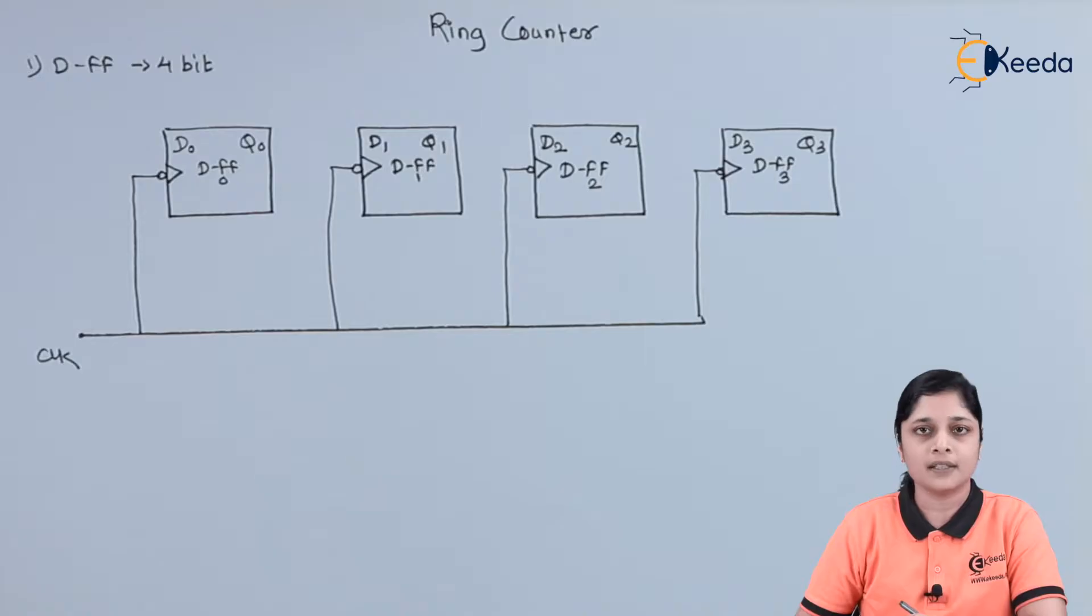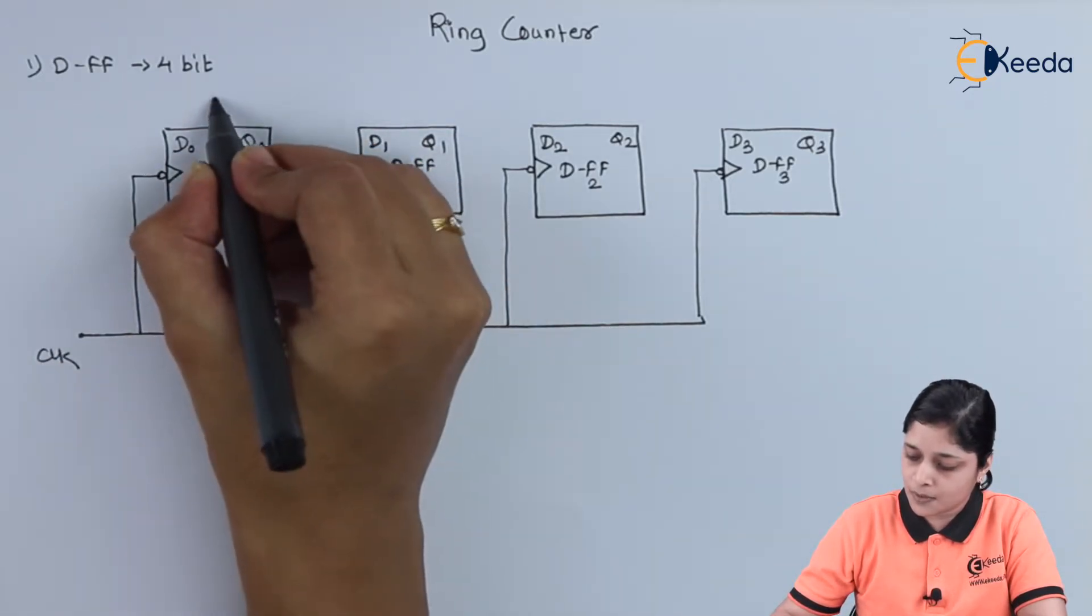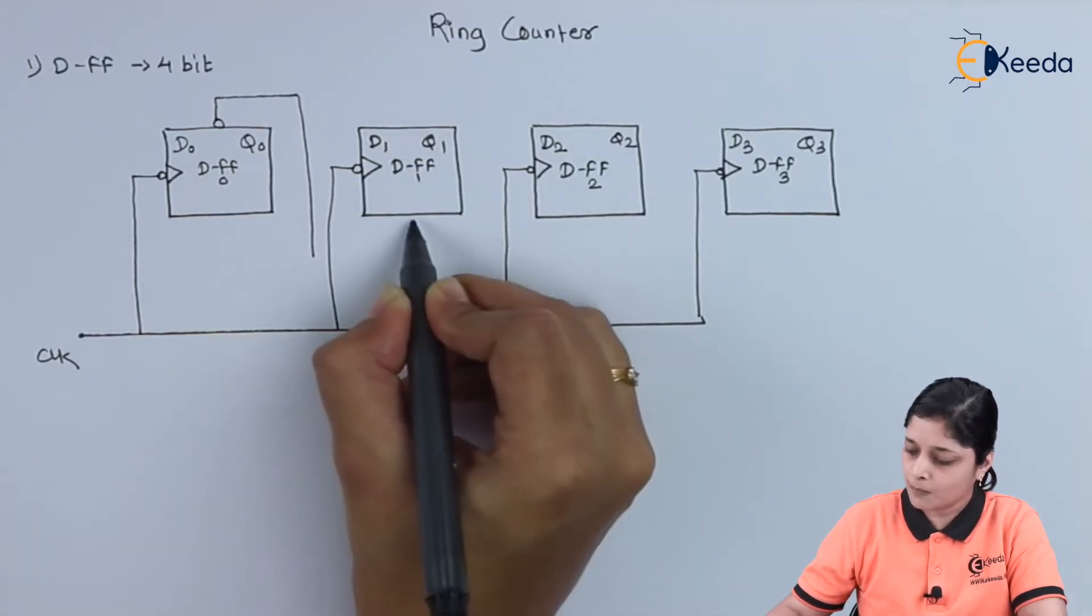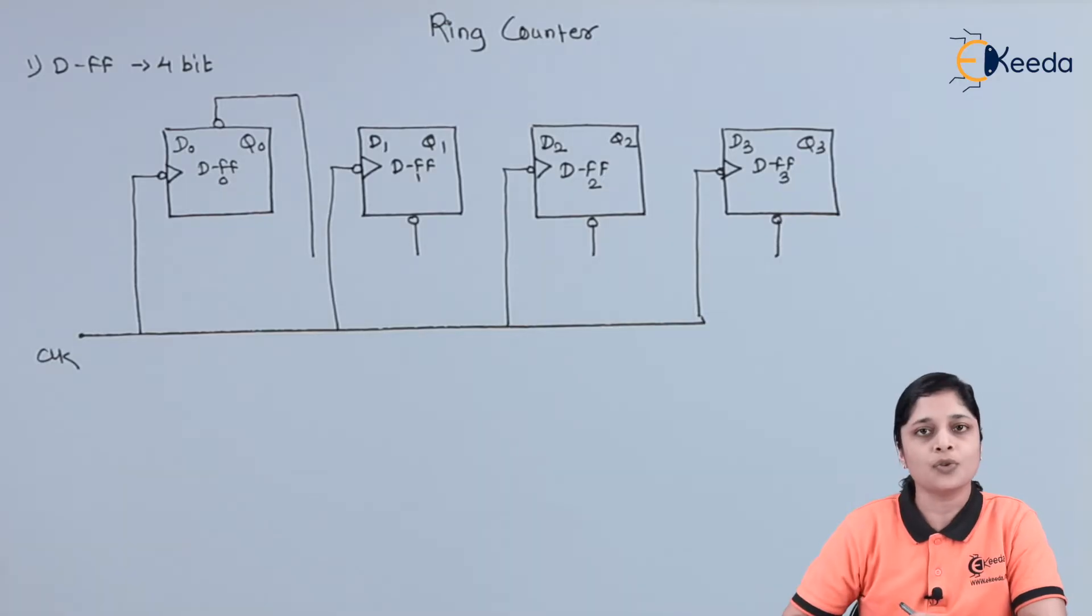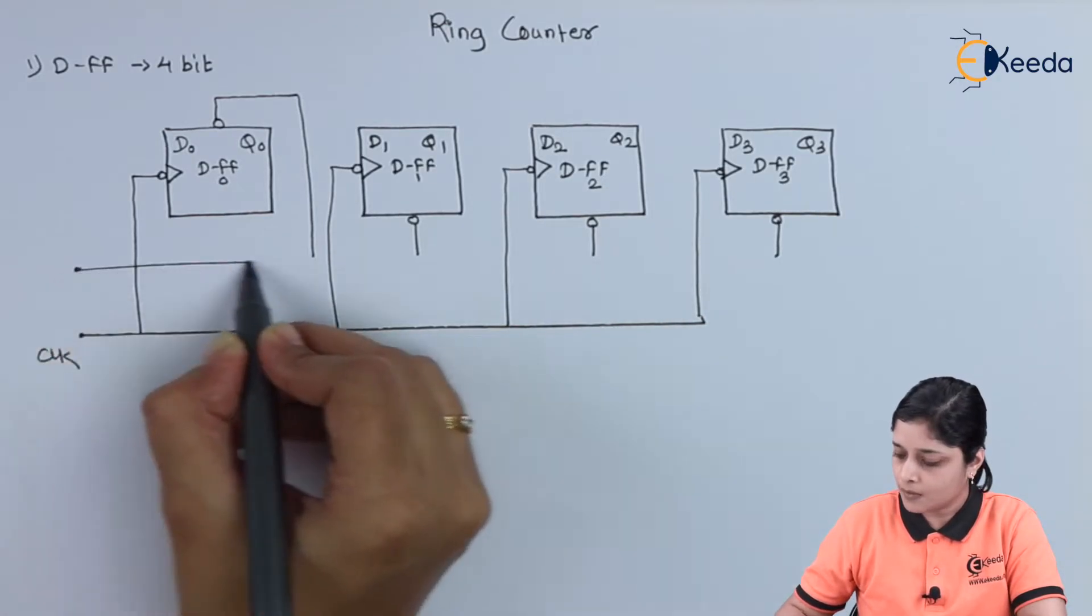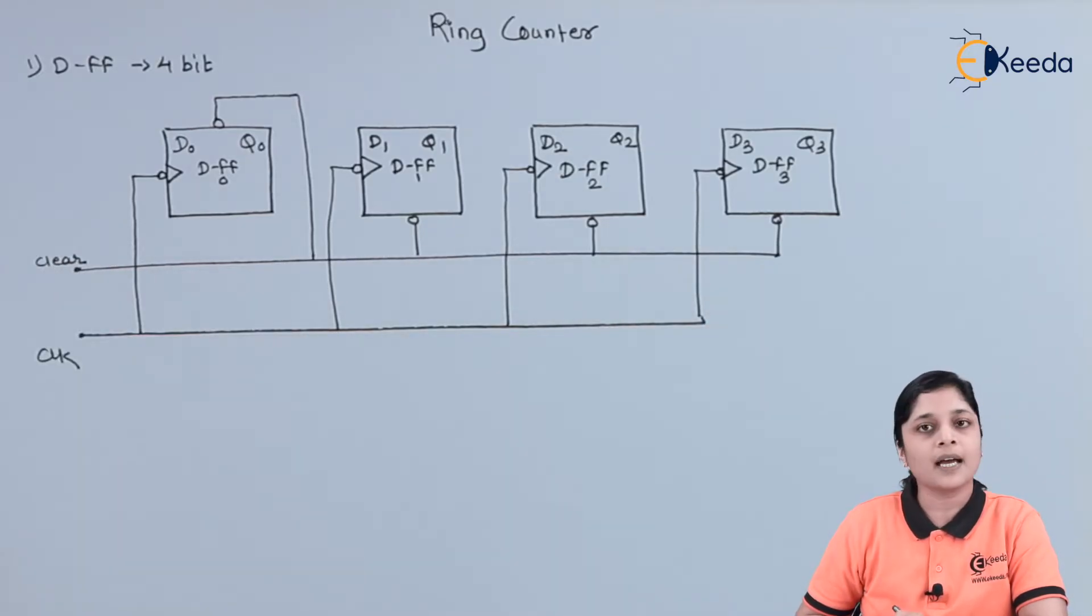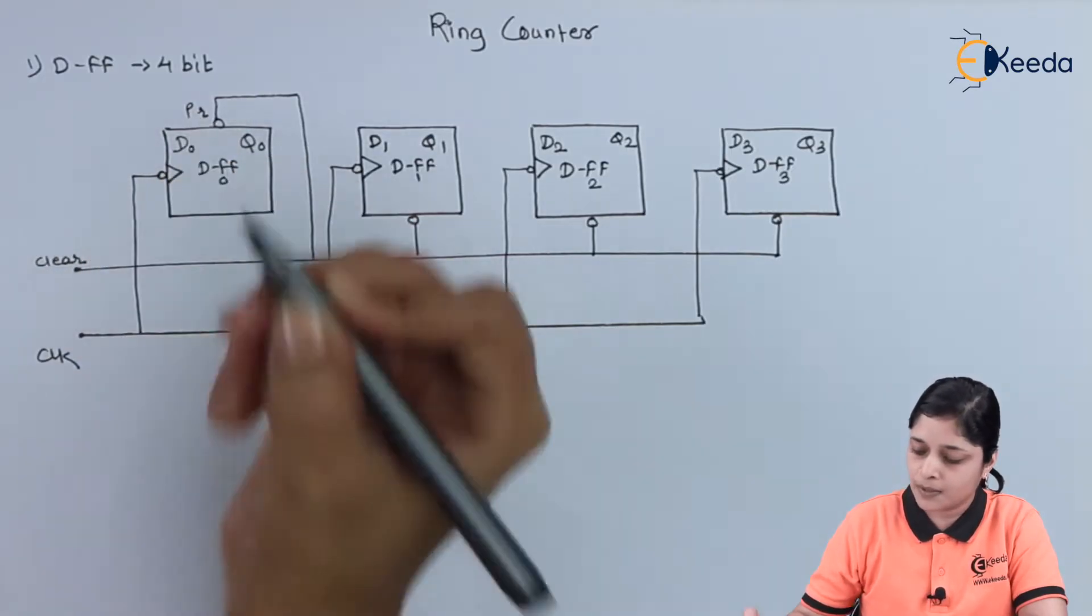While designing the ring counter, you have to consider the preset and clear terminals for its operations. This becomes your preset terminal. With the use of these terminals, you can design the ring counter. These are the active low signals. That's why we have shown here bubble.